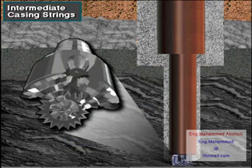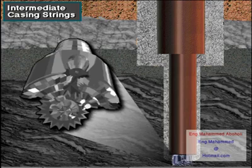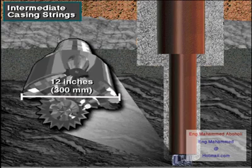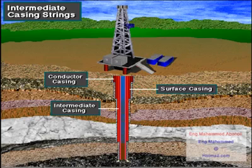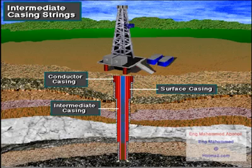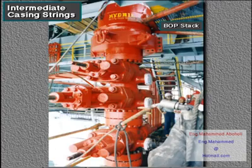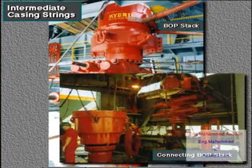To drill the intermediate hole, the operator chooses a still smaller diameter bit which easily fits inside the surface casing — a bit of about 12 inches or 300 millimeters in diameter is one example. Intermediate casing is also set in place to seal off troublesome formations like lost circulation zones or abnormally pressured zones. It is often the longest section of casing in the well.